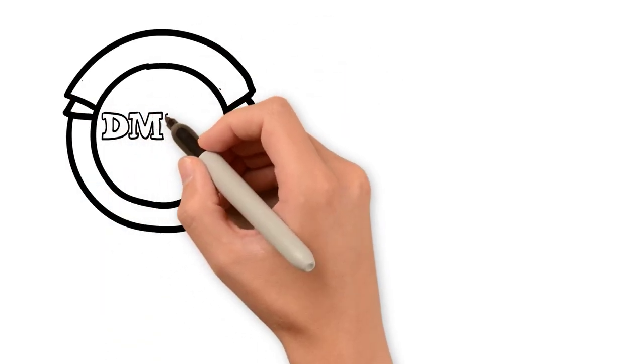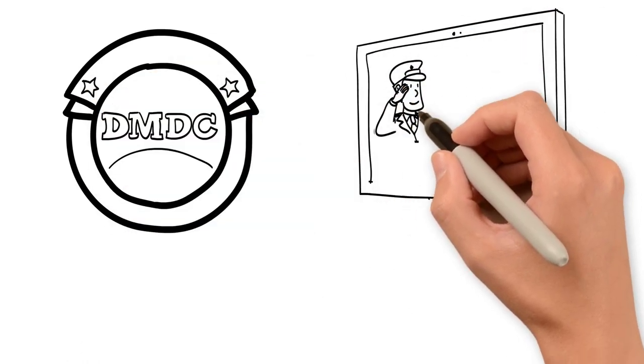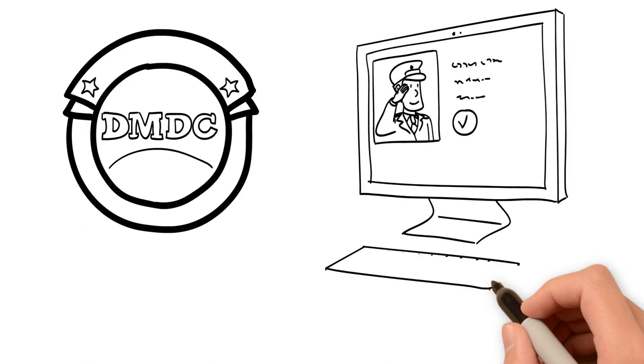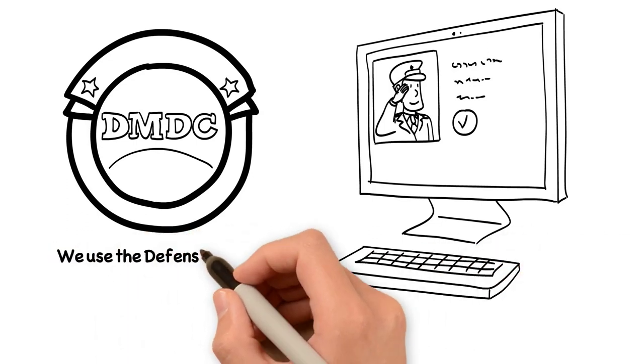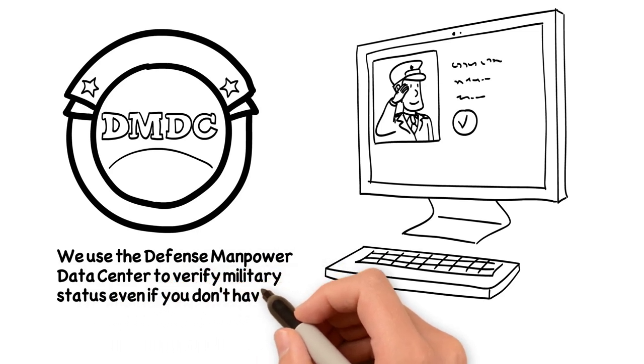How can you be sure you are in compliance with the SCRA? Use the Service Members Civil Relief Act Centralized Verification Service. We use the Defense Manpower Data Center to verify military status, even if you don't have a social security number or a date of birth.